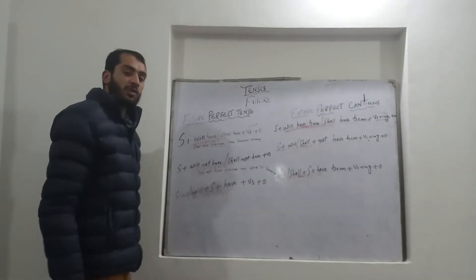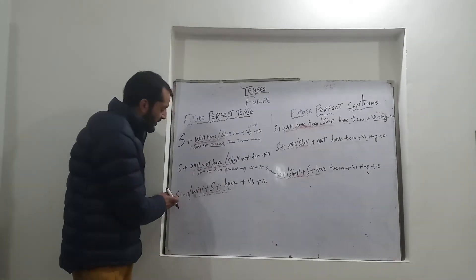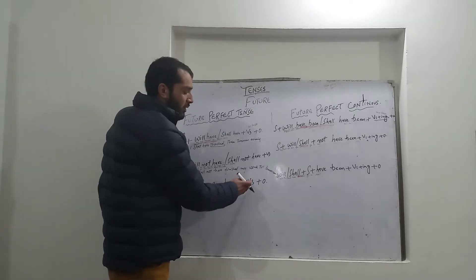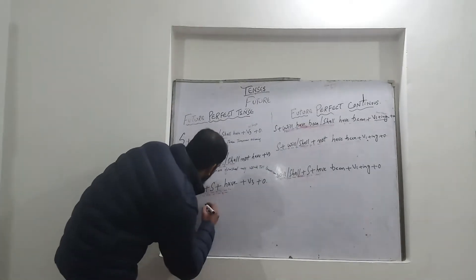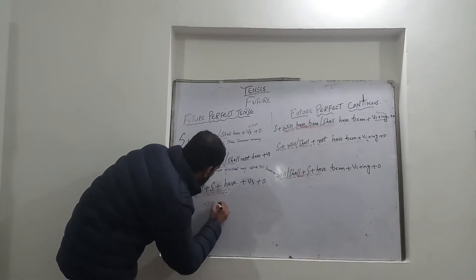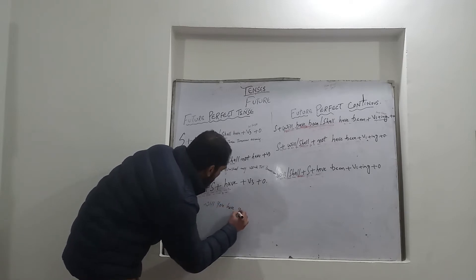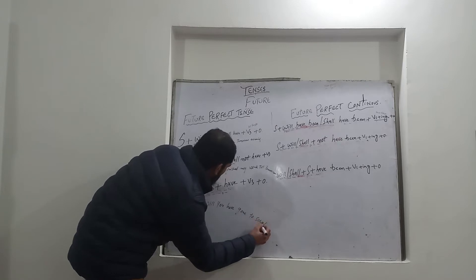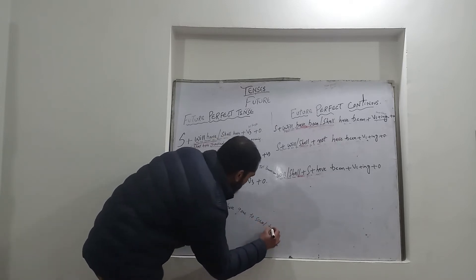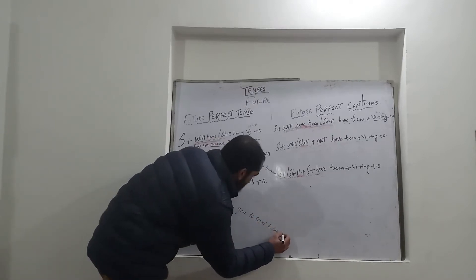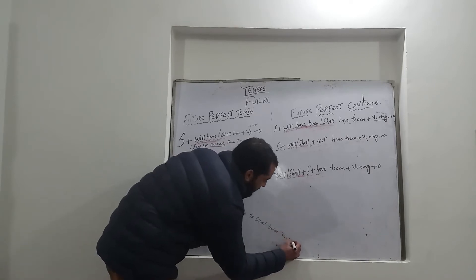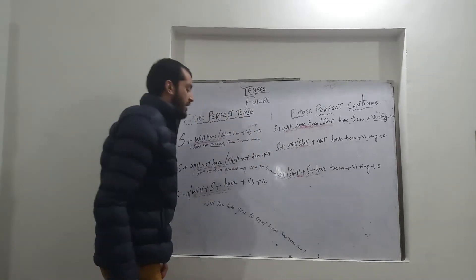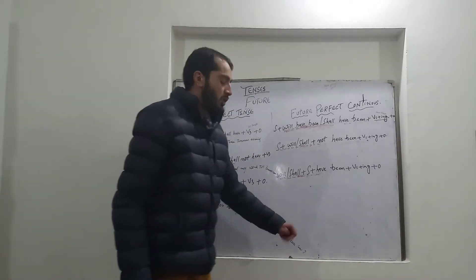For interrogative sentences, the structure is: shall or will plus subject plus have plus verb third form plus object, with a question mark at the end. For example: Will you have gone to school before they reach there?